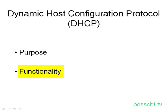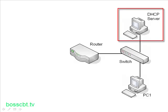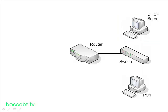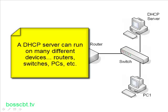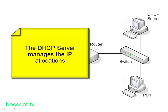Now let's take a look at the functionality and see how DHCP actually works. In our lab setup we have a router and a switch. Off the switch hangs a PC and a DHCP server. A DHCP server can be a dedicated piece of hardware — the server is actually a program that can run on a PC, an actual server, a router, or a layer 3 switch. The DHCP server is responsible for allocating IP address information — it keeps a pool of available IPs and manages the process of allocating and sometimes taking back IP addresses.